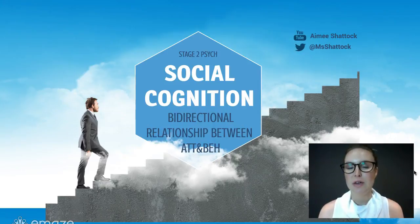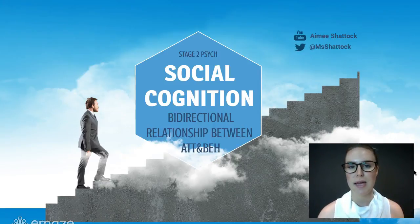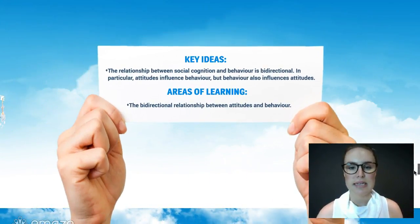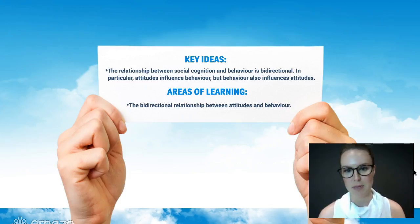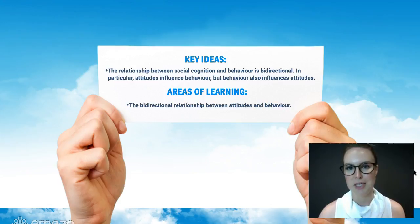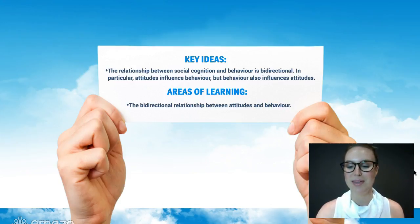Hi everyone. In this video I'm going to talk about the bi-directional relationship between attitudes and behaviour. The key idea here is that that relationship is bi-directional, which means one affects the other, and the area of learning is the bi-directional relationship. So we're really covering some important points here today.